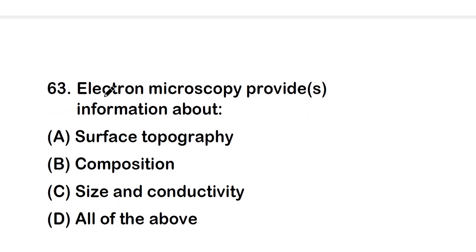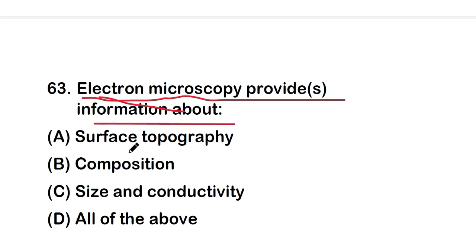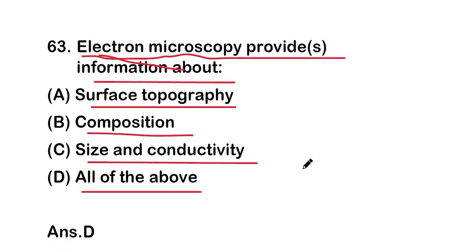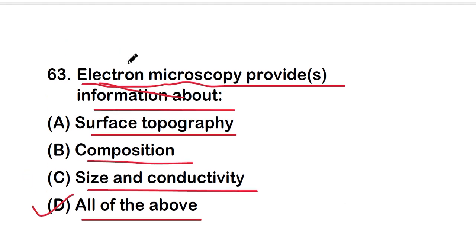Next question: electron microscopy provides information about which of the following — surface topography, composition, size and conductivity, or all of the above? The right answer is option D, all of the above. Electron microscopy provides information about surface topography, composition, size, and conductivity.